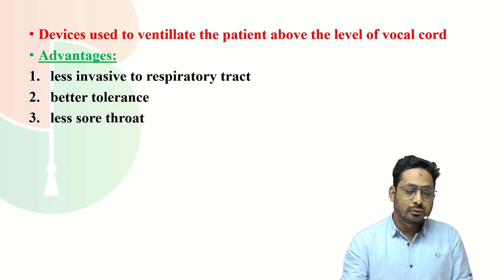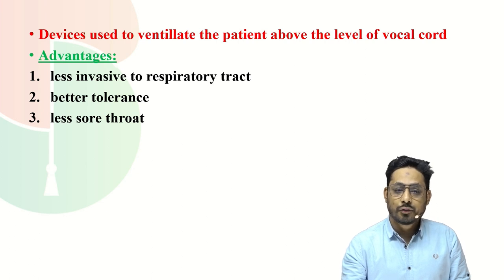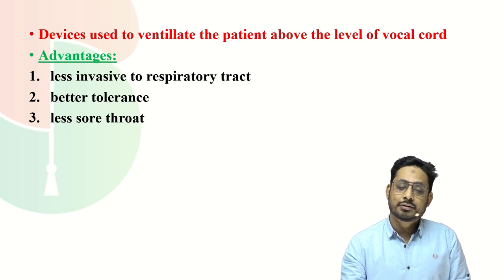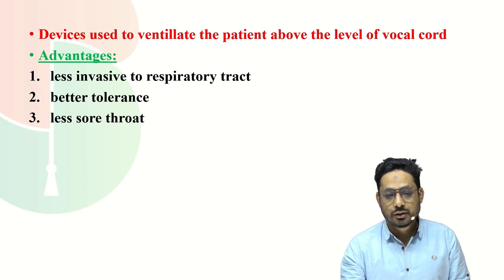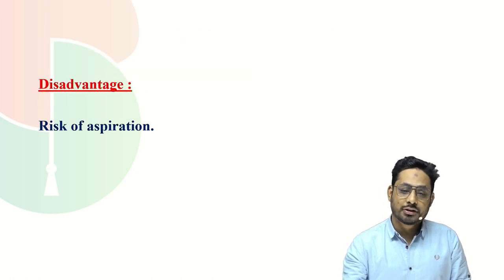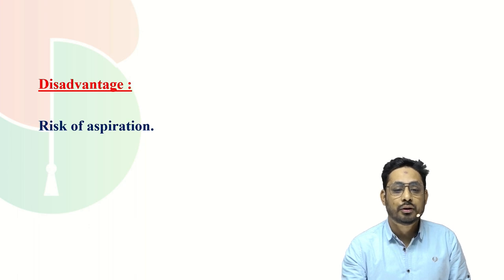Supraglottic devices are different from intraglottic devices. In supraglottic devices, ventilation is done above the glottis, that means above the level of the vocal cord. The first advantage is that since the devices are placed in the supraglottic region, they are less invasive to the respiratory tract. They are better tolerated, and since they are above the level of the vocal cord, there is less chance of sore throat. The disadvantage is that since these devices are placed above the level of the vocal cord, they will never prevent aspiration, so there is a high risk of aspiration.